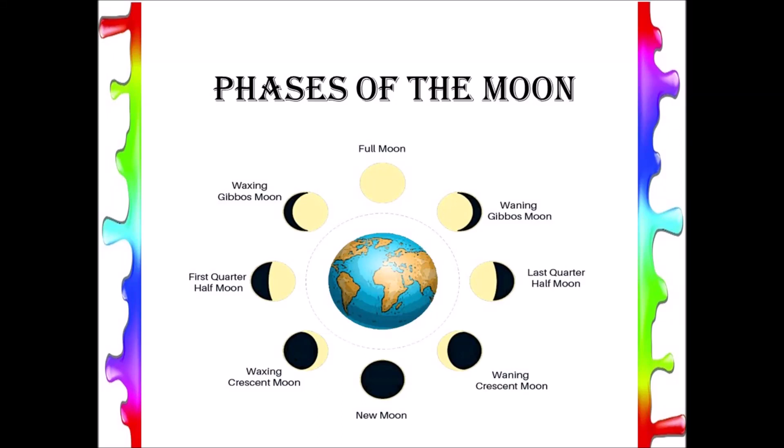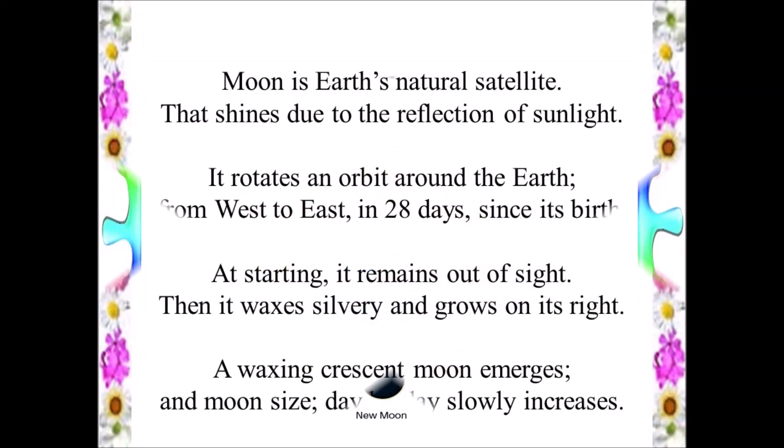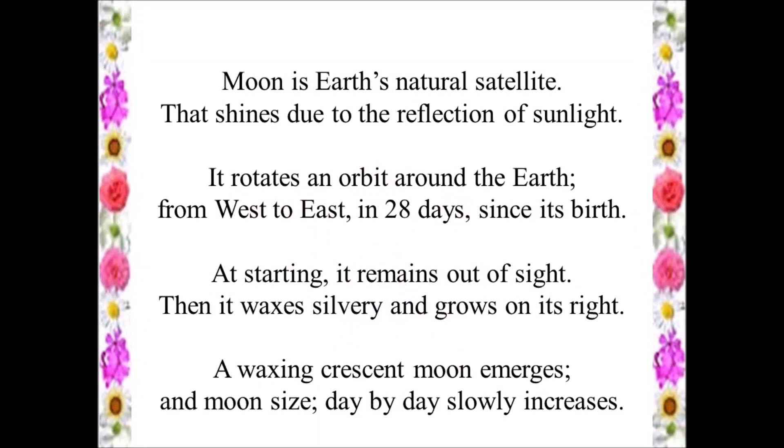Phases of the Moon. Moon is Earth's natural satellite that shines due to the reflection of sunlight. It rotates in orbit around the Earth.